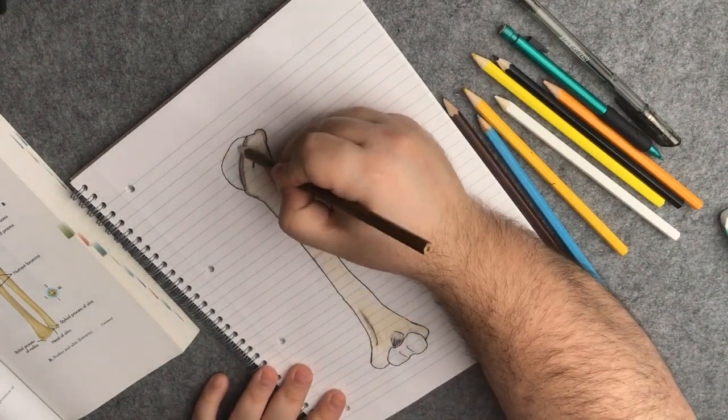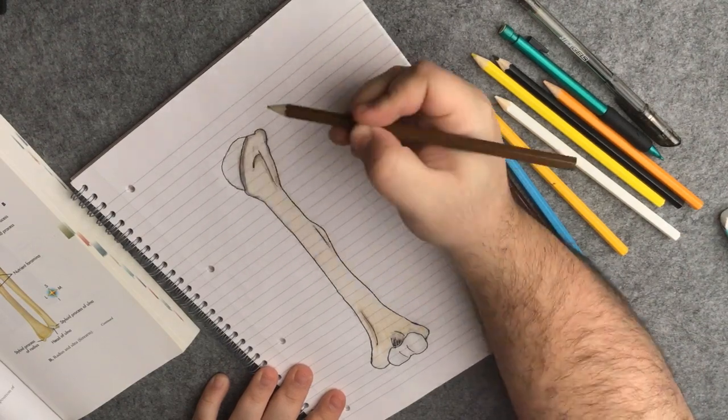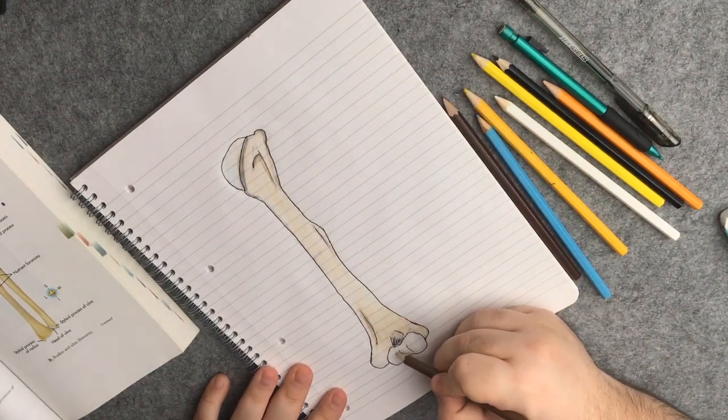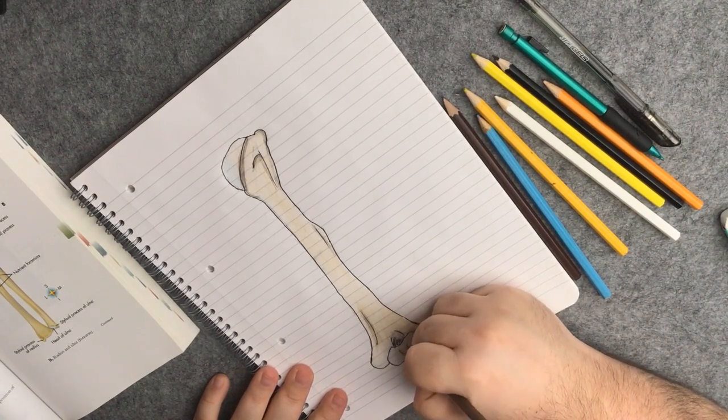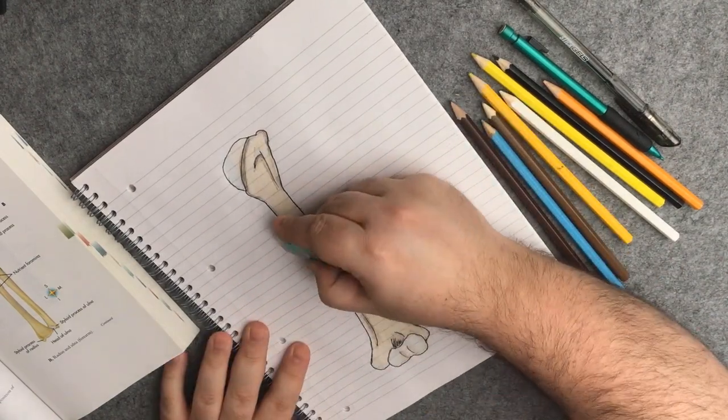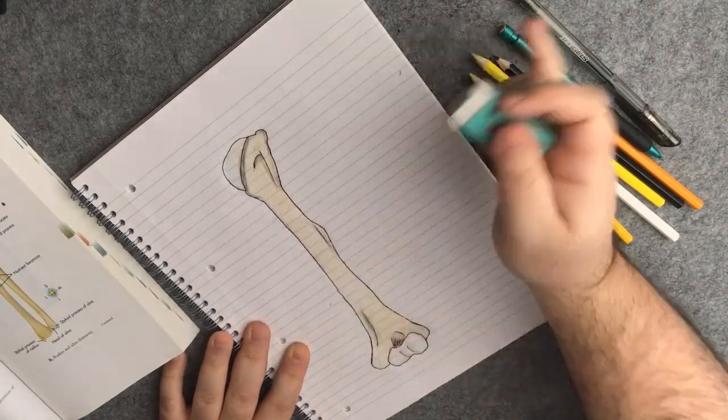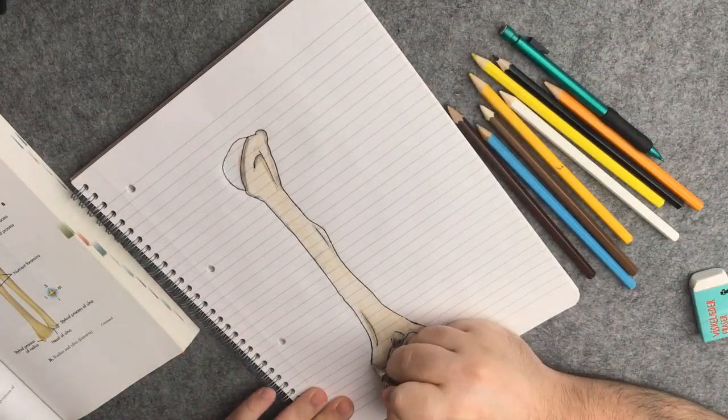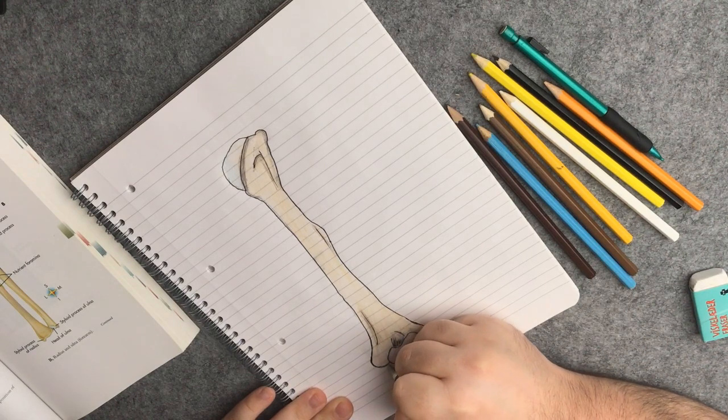I go back again with some brown for some additional shading. Then it is time to do some finishes by erasing some of the pencil lines. And then I go back in with my stick gel pen to fill in some of the gaps here.